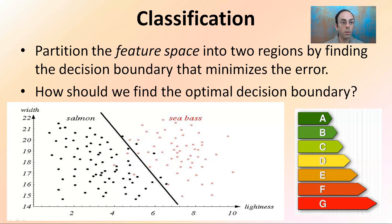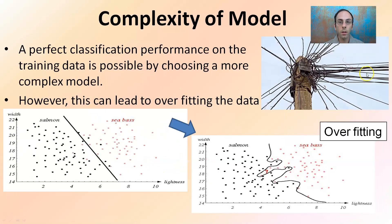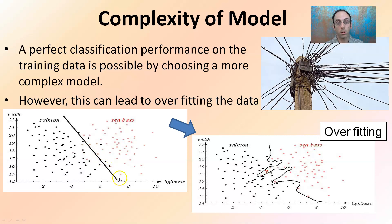We classify things by partitioning the feature space into two regions, finding the decision boundary that minimizes error — not necessarily eliminates error. We should find the optimal decision boundary. Perfect classification performance on training data is possible by choosing a more complex model; however, this can lead to overfitting the data. Instead of a simple line, if we overfit that model and get too complex, we'd create a complicated boundary — not useful data. We want where it's mostly true; it doesn't always have to be true. This is overfitting the data.